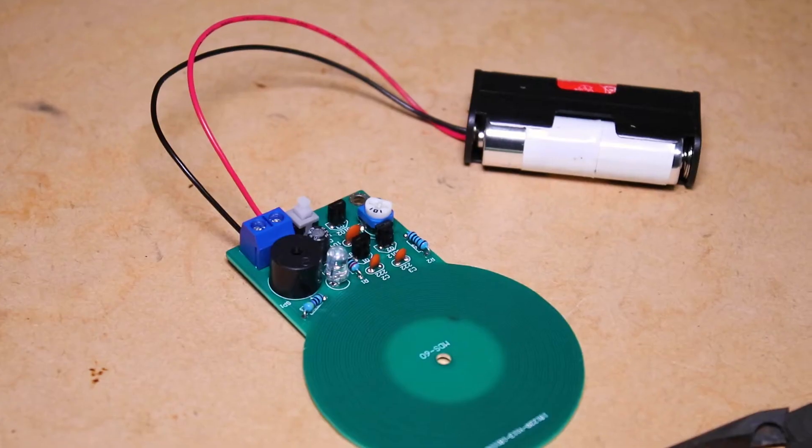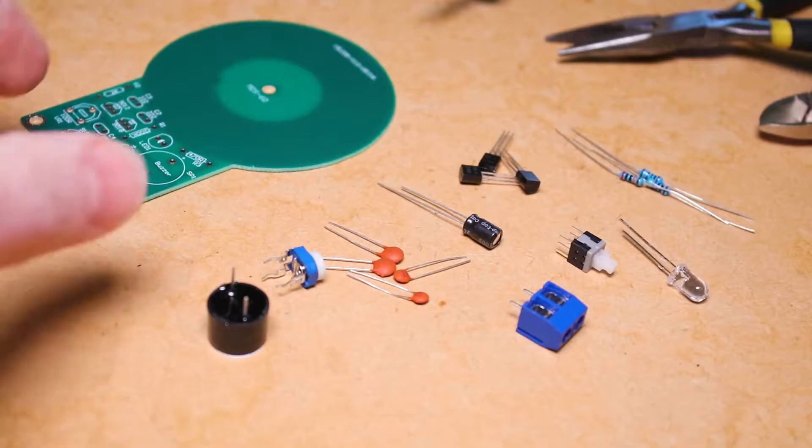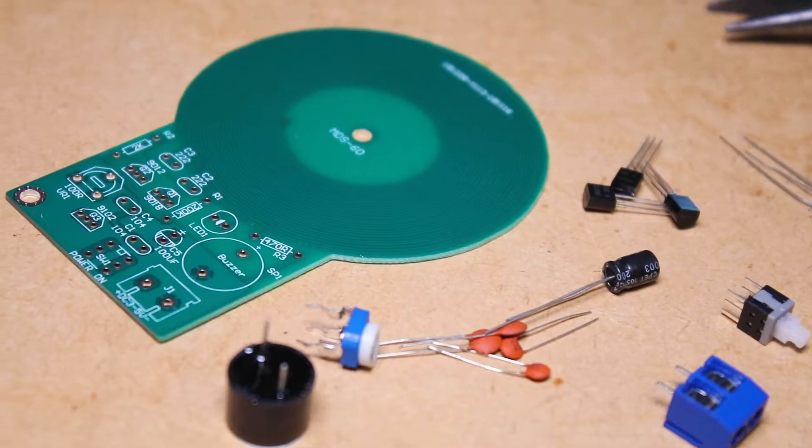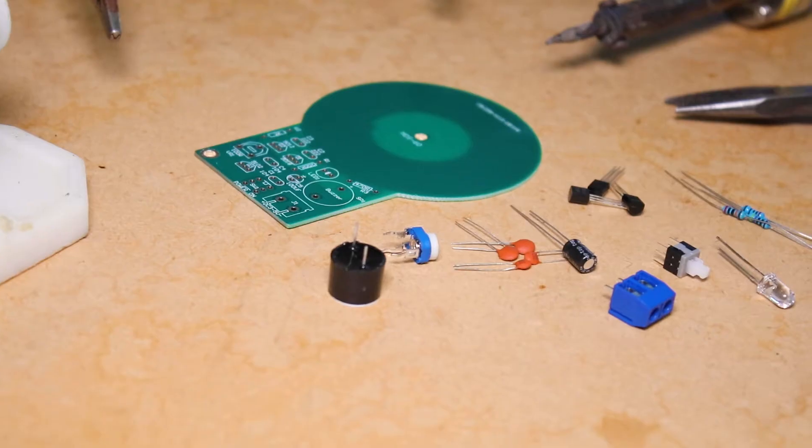Hi, it's Nick from Hobby Electronics and in this kit build I'll be assembling a simple metal detector. I'll start off by laying out and grouping all of the components.